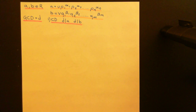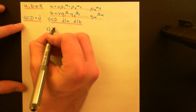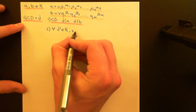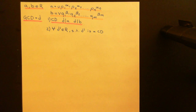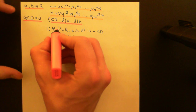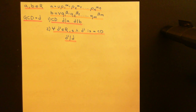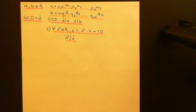Now let's look at what the greatest common divisor is going to be. A greatest common divisor must be one such that if you take any other common divisor D prime — any other element of the commutative ring that divides A and divides B — then it must be the case that D prime divides the greatest common divisor D. So if D is a greatest common divisor, it must be a common divisor and also a multiple of all other common divisors you can possibly come up with.